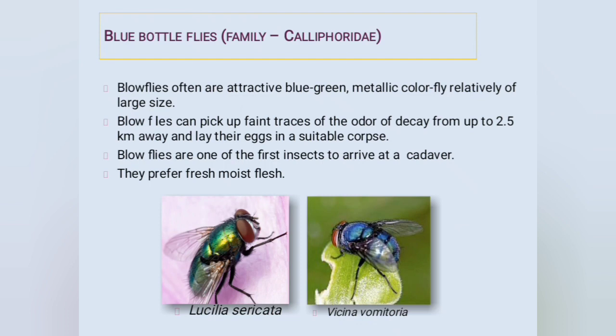Even if dead bodies are far away, these insects can detect them by smell from up to 2.5 kilometers. Blow flies are one of the first insects to arrive at a cadaver; they prefer fresh and moist flesh. Using their presence, we can estimate the PMI — if eggs or larvae are found on a dead body, the PMI is assumed to be one to two days, as these insects prefer only fresh, moist remains.